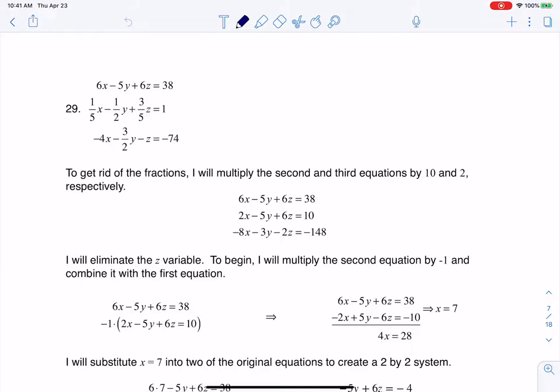And the first thing I want to do when I look at that system is I see some fractions in there. So I'm going to multiply by the LCD and get rid of those fractions. And the LCDs respectively for the second and third equation are 10 and 2. So when I get done with that, I've got this nicer looking system of 3x3s and there's no fractions in them.